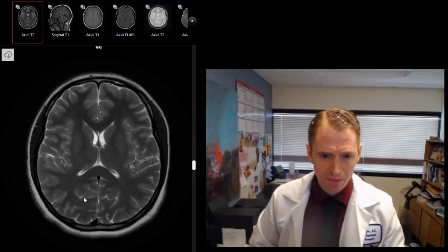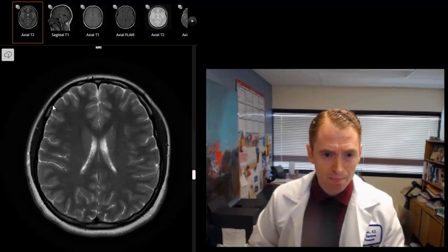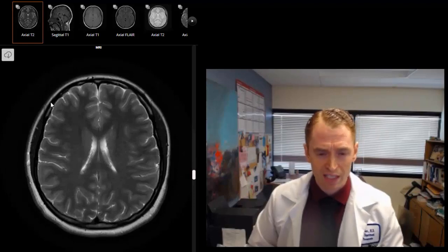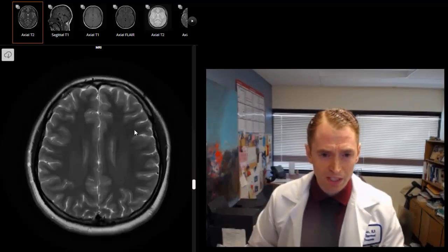These are the air-filled sinuses. If I scroll up, you can see the brain here, and you can see the skull on the outside. The bone of the skull is dark and the marrow looks bright, and the subcutaneous fatty tissue also looks bright. So that's why the skull has this sort of multi-layered appearance.